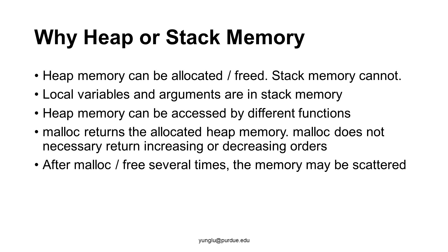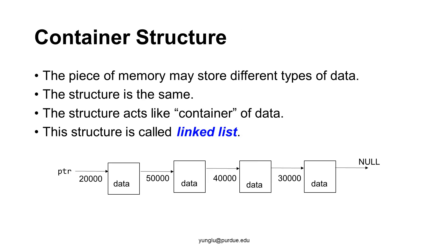A linked list is an example of a container structure. Each piece of memory may store some data, and the structure is the same for different types of data — each node has a pointer to another piece of memory. Because this structure can store different types of data, the structure is like a container. Thus, we call this a container structure. If each piece of memory has only one pointer, we call this structure a linked list.